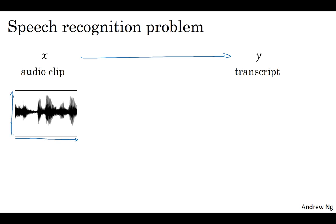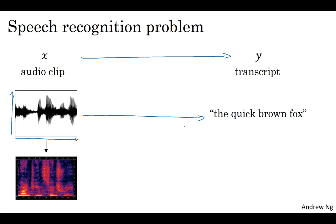If this audio clip is of me saying the quick brown fox, then hopefully a speech recognition algorithm can input that audio clip and output that transcript. Because even the human ear doesn't process raw waveforms, but the human ear has physical structures that measure the amount of intensity of different frequencies.